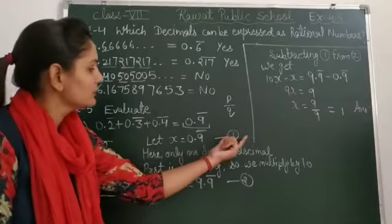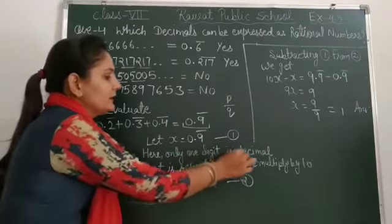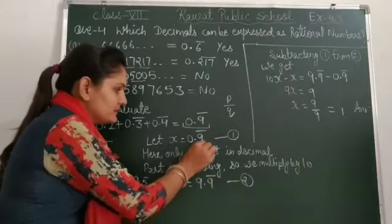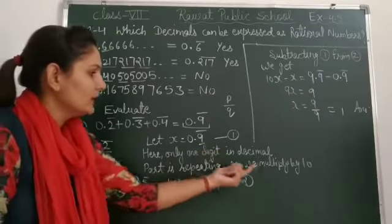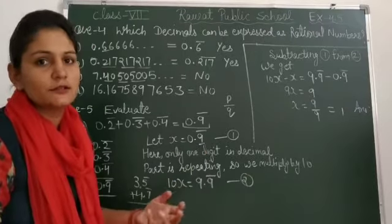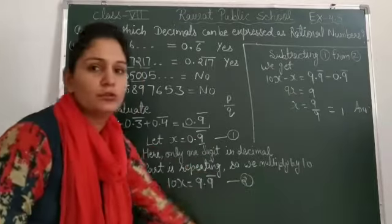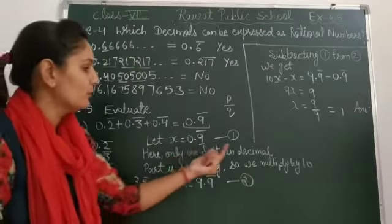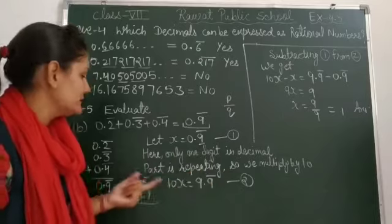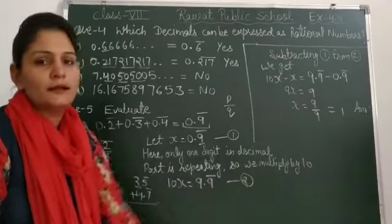This will be equation 1. Here only one digit in decimal. See how many digits are after the decimal. If single digit, we multiply by 10. If 2 digits, then 100. If 3 digits, then 1000. So 0.9 bar, here only one digit in decimal part is repeating, so we multiply by 10.